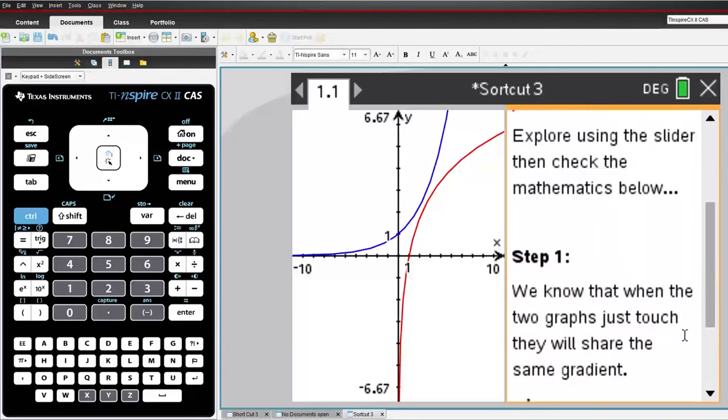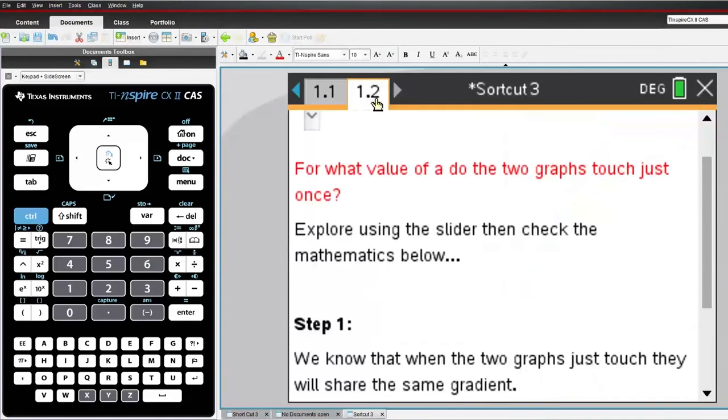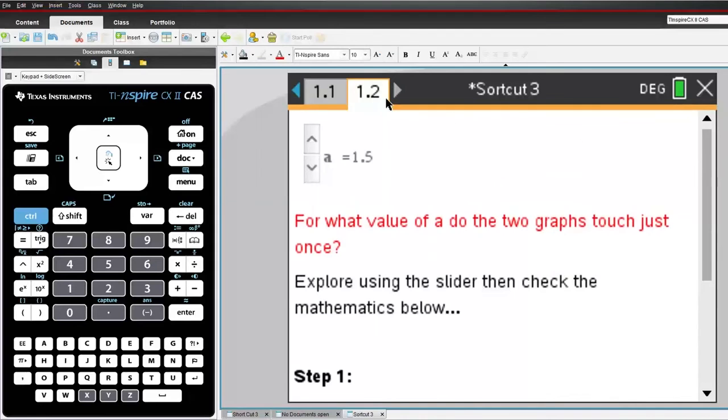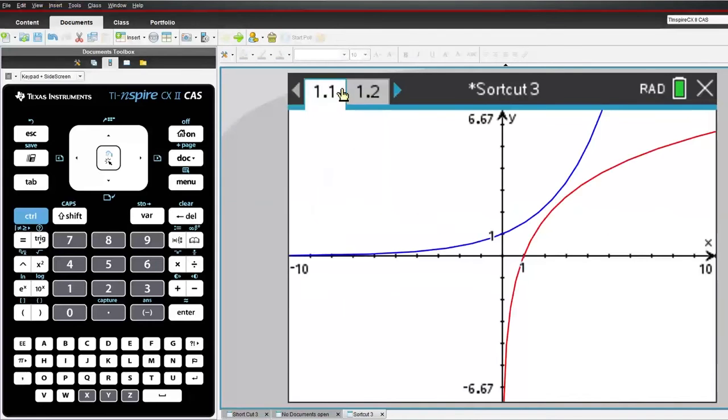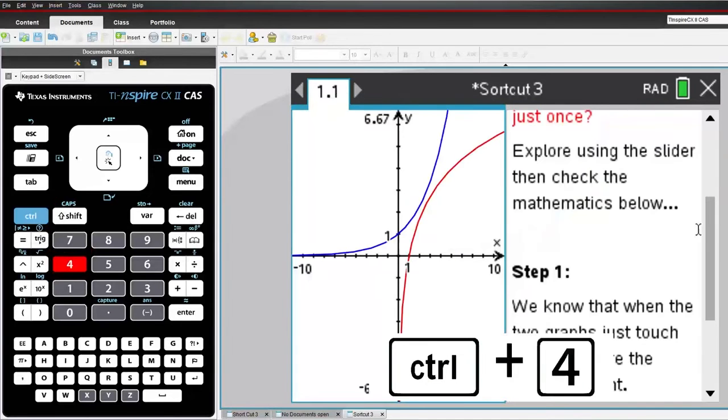I can ungroup the two pages by pressing CTRL and 6 to ungroup. Notice now that I have two pages. Each one has just one application. To regroup or group two pages, navigate to the first one and press CTRL and 4.